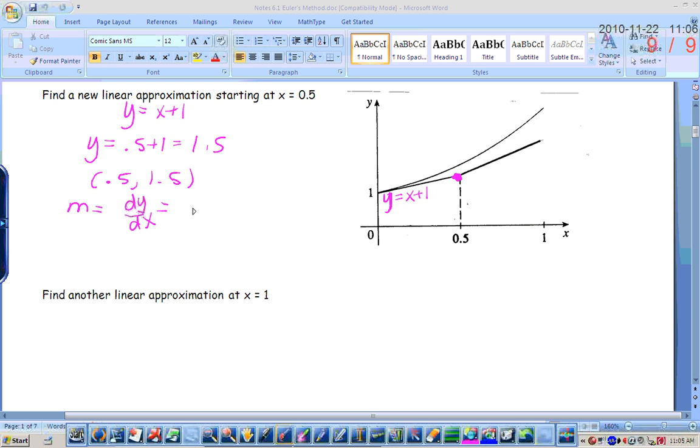So dy/dx, or m, would equal 2. So my new line, I'm going to use the slope of 2 and the point (0.5, 1.5), so y minus 1.5 equals 2 times (x minus 0.5). And normally I don't make you solve for y, but because we're going to keep using each line to write the next one, I'm going to go ahead and solve for y. So if I distribute this 2 and add 1.5 to both sides, we're going to cheat, and I'm going to tell you that it's y equals 2x plus 0.5.